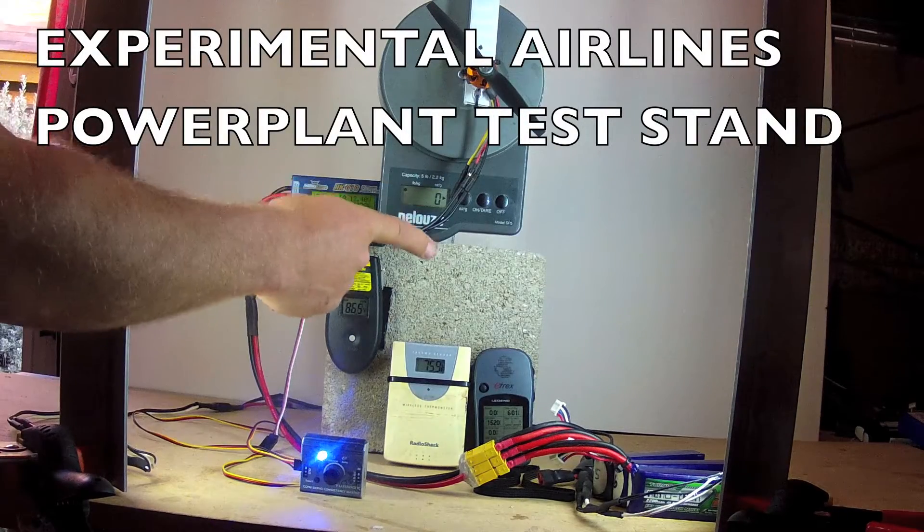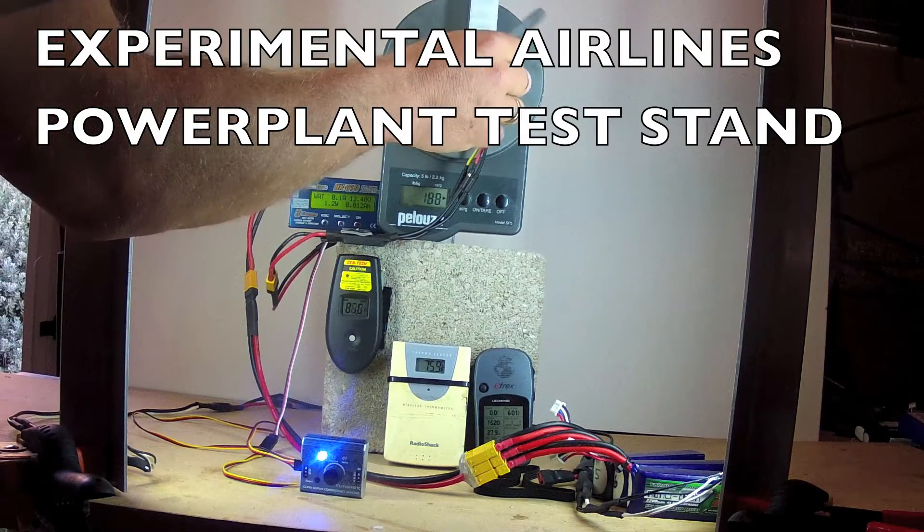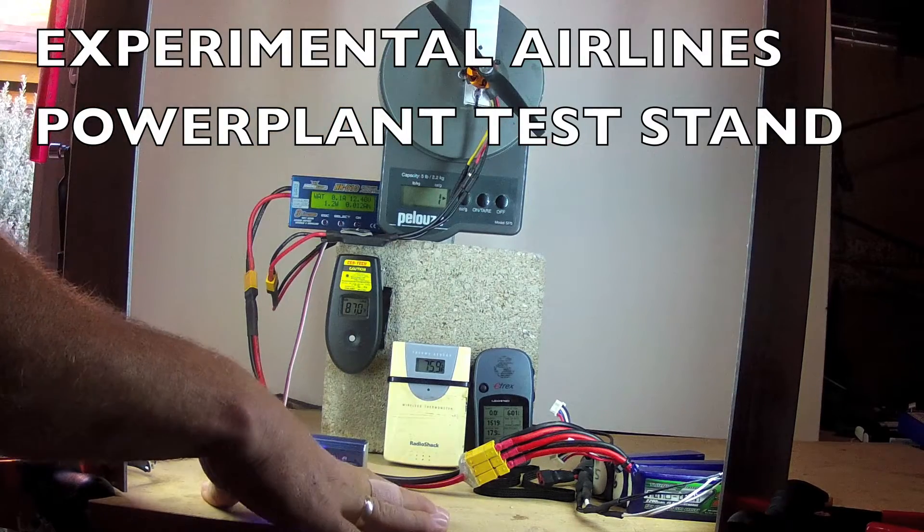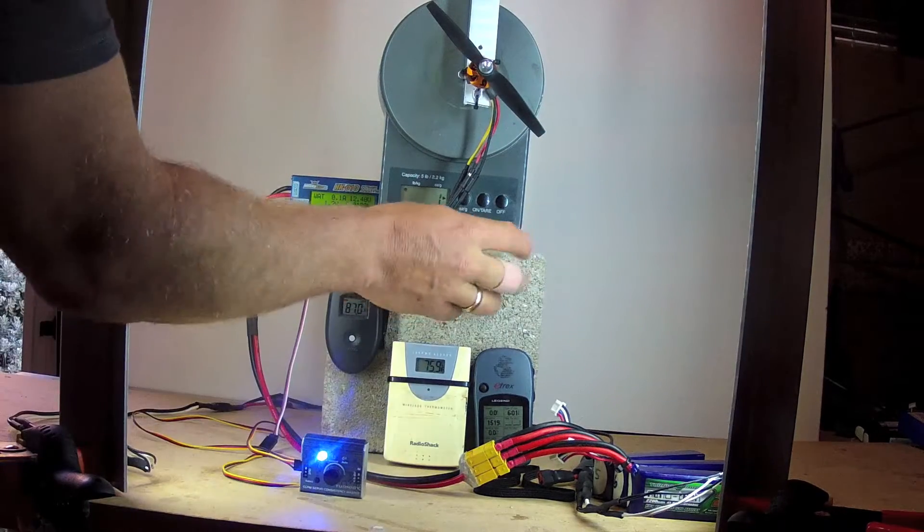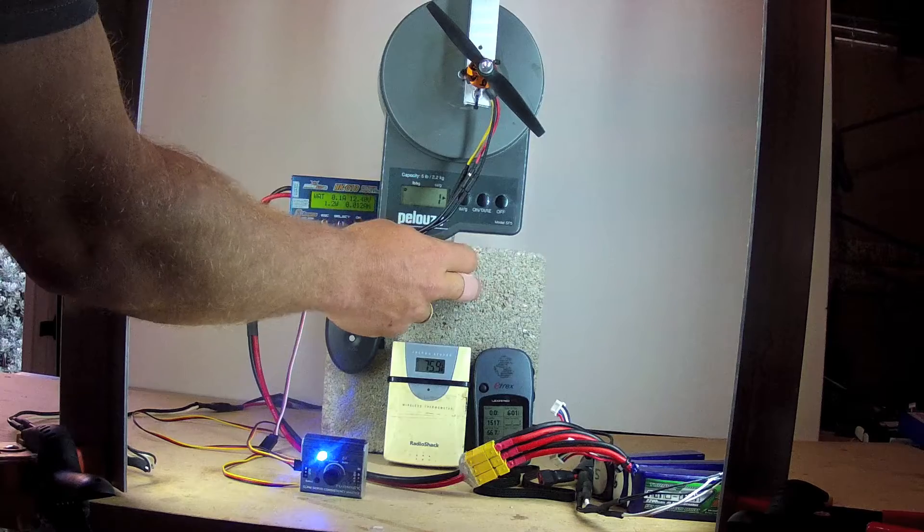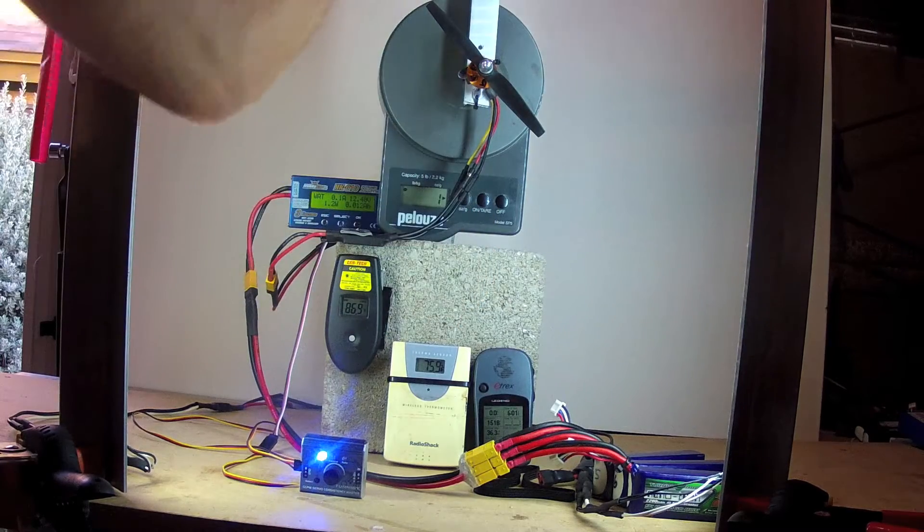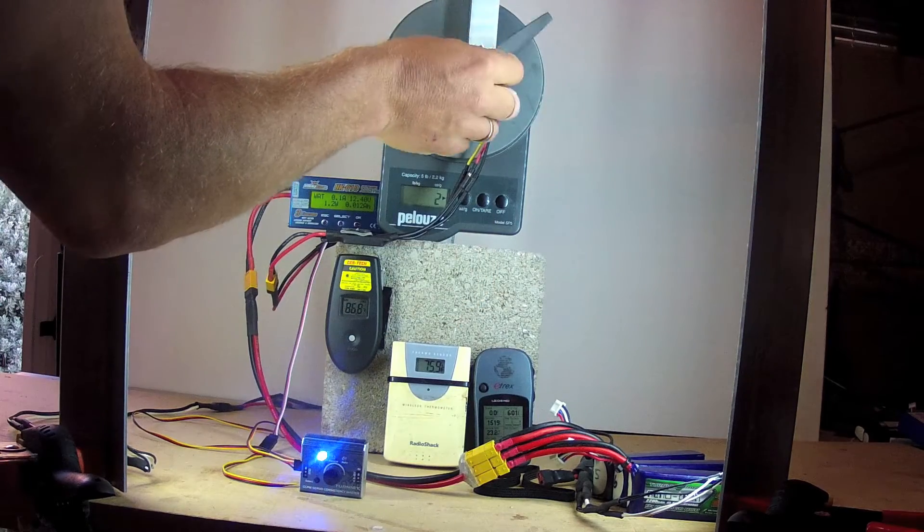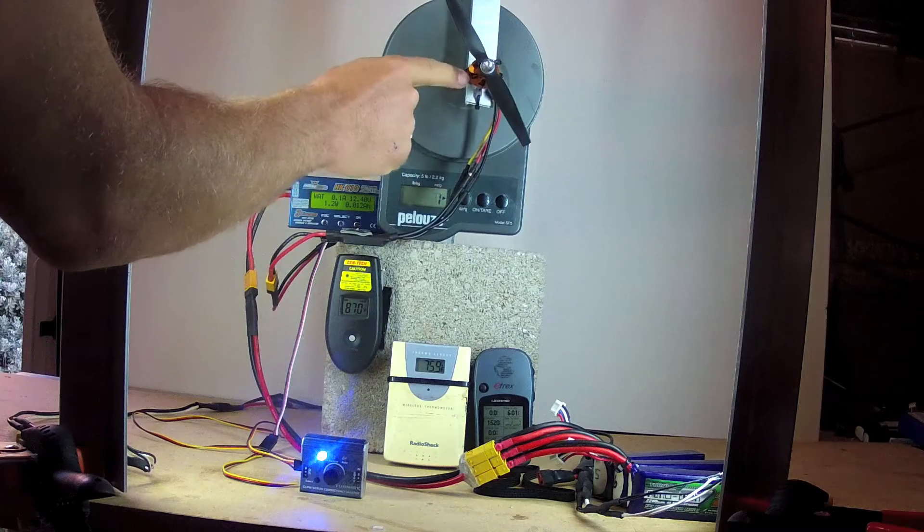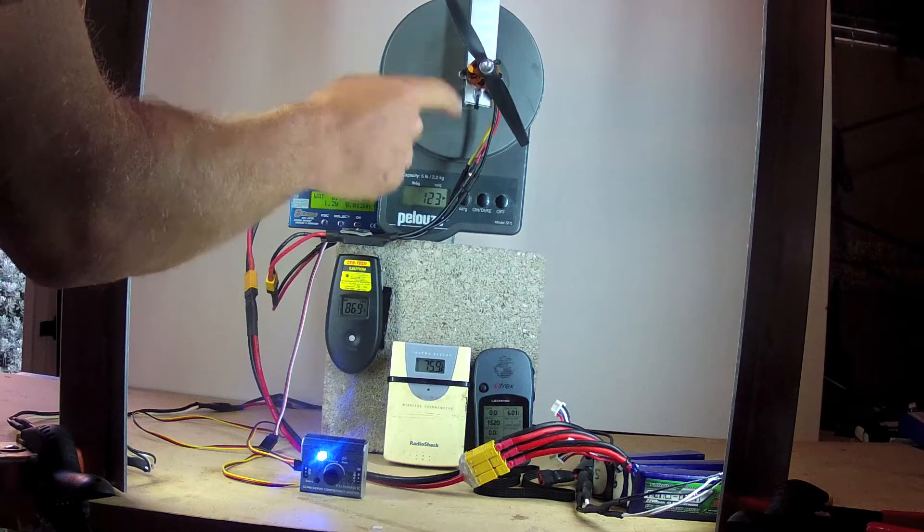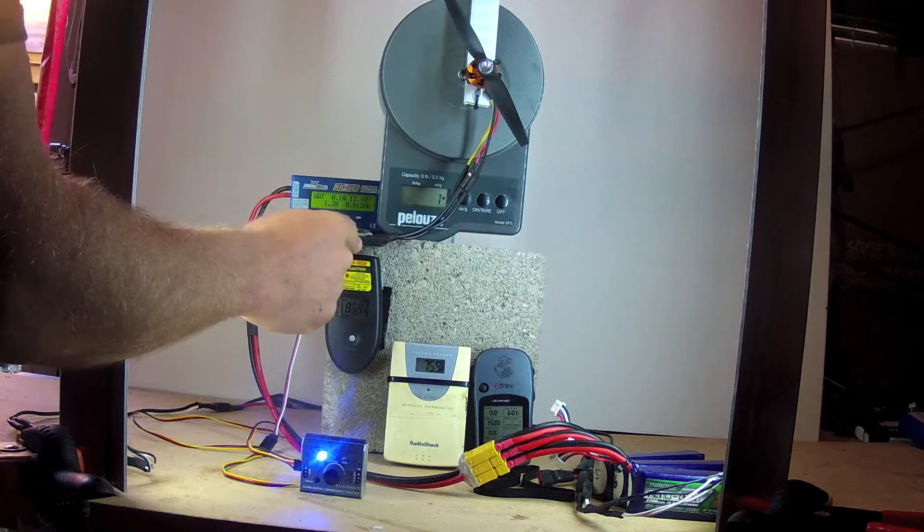Here's the power plant test stand that I'll be using to test the variety of power plant options that the EA fleet uses. It starts with this 8x8x8 inch concrete block filled with concrete and a vertical member made of aluminum angle to which is mounted the power plant motor itself with the motor leads coming to the ESC down here.